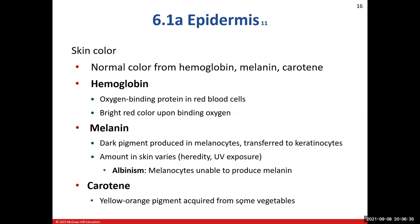Melanin is that substance the melanocytes make, and its production is determined by genes — depending on mom and dad, that will determine how much melanin you produce. Also, when you step out into the sun, ultraviolet radiation strikes your skin and the melanocytes will produce melanin. All of us have essentially the same number of melanocytes, but some people's melanocytes are much more active than others.